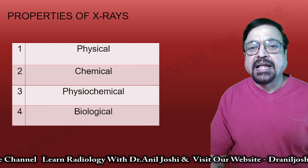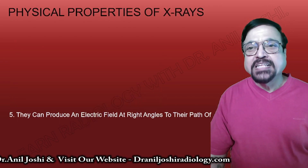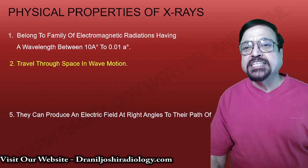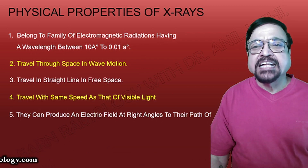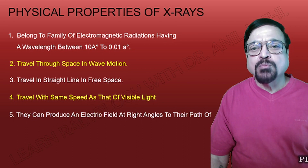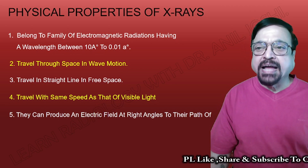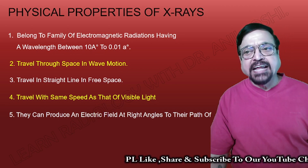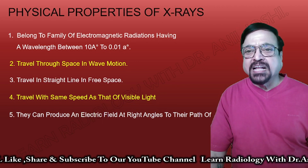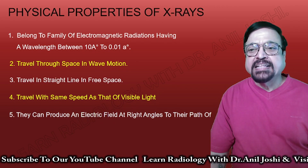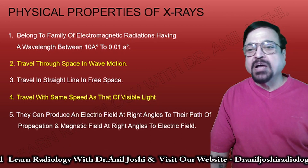Now we'll go to the main topic: the properties of X-rays. They are physical, chemical, physiochemical, and biological. Starting with physical properties — X-rays can produce an electric field at right angles to their path. They belong to the family of electromagnetic radiation with a wavelength between 0.01 and 10 Ångströms. They travel through space at the speed of light in the form of a wave.